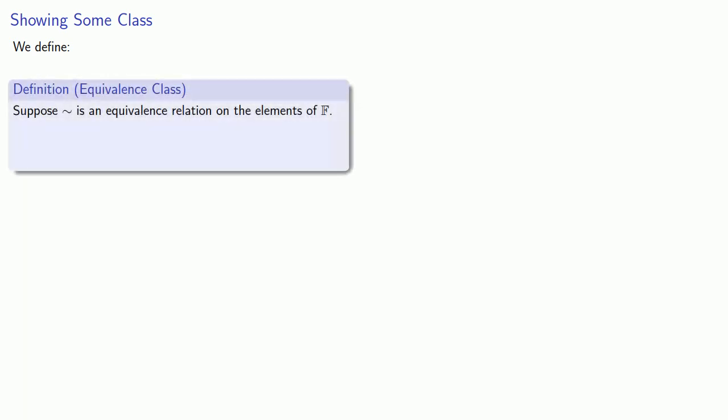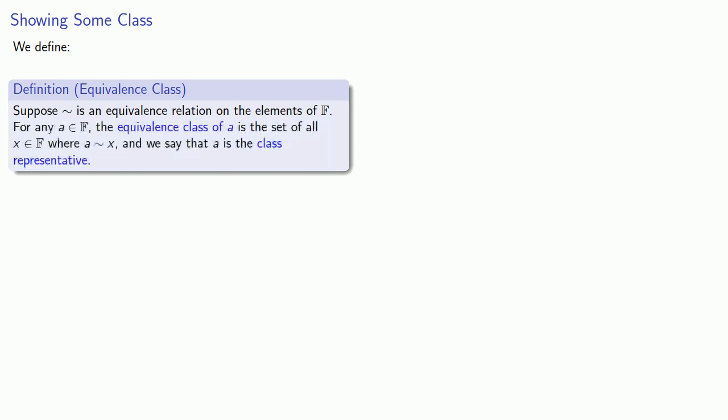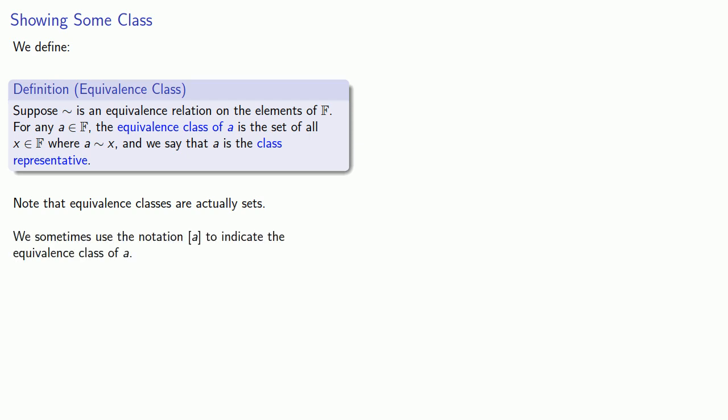What can we do with an equivalence relation? We can define an equivalence class. Suppose squiggle is an equivalence relation on the elements of some set F. For any A in our set, the equivalence class of A is the set of all things in our set F where A squiggle x. We say that A is the class representative. Sometimes we use notation like square bracket A to indicate these equivalence classes.